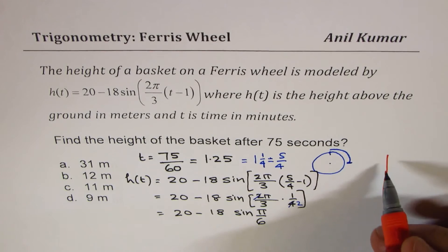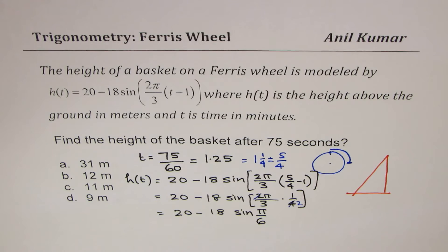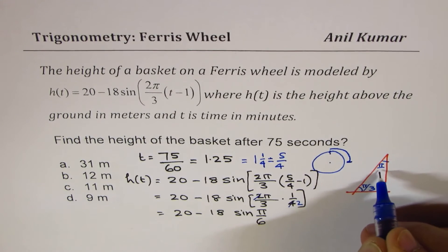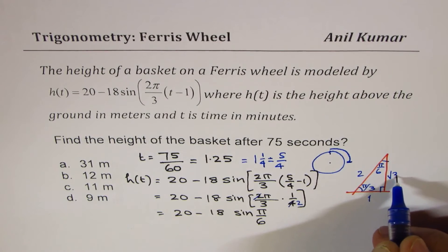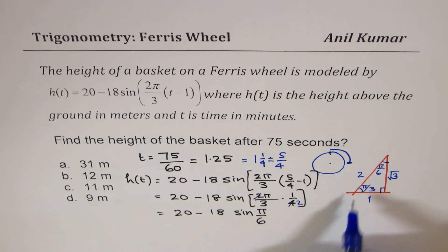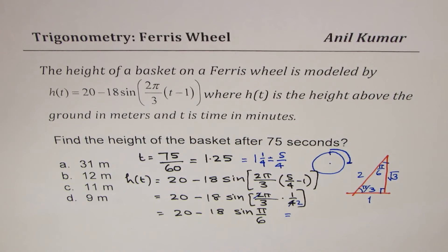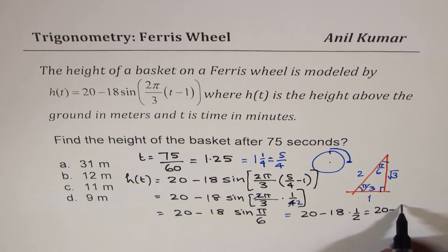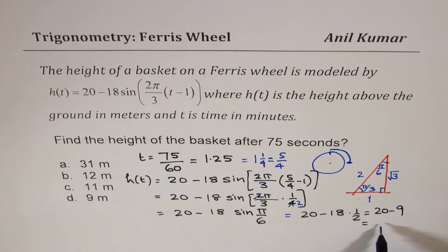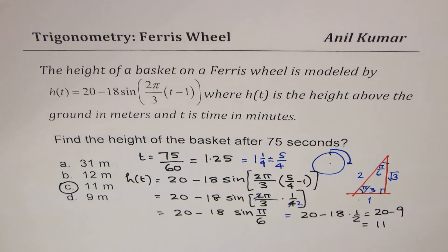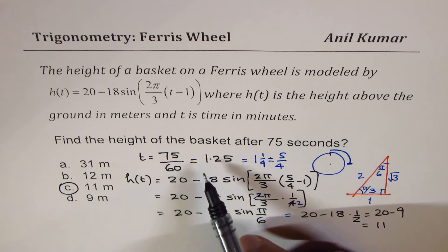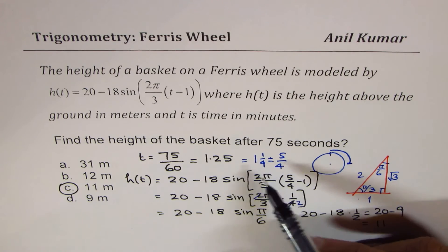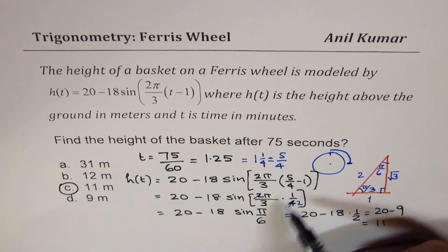We could write this as 20 minus 18sin of, let me just simplify this. That goes 2 times. So we are left with π/6. So we get sin(π/6). Now, what is sin(π/6)? Well, special triangle. This is the special triangle. Where, let us say this is 90 degrees. This is π/3. I prefer to use this triangle. And the sides are 1, 2, square root 3. So sin(π/6) is half. So we could write this as 20 minus 18 times half, which is 20 minus 9. And that gives you a value of 11. So part C is the right option. I hope all these calculations are clear. You could have written as 1.25. You will get quarter here, which is 1 over 4. And then also you could have done the same thing. But you will soon realize that working with fractions is easier calculations.